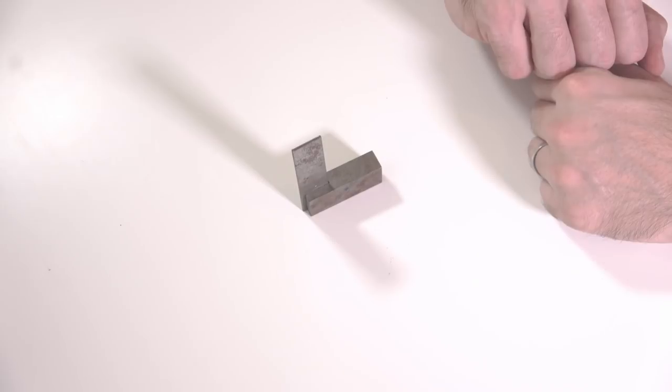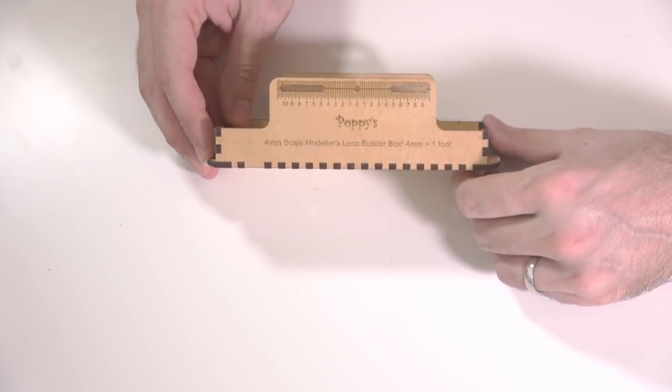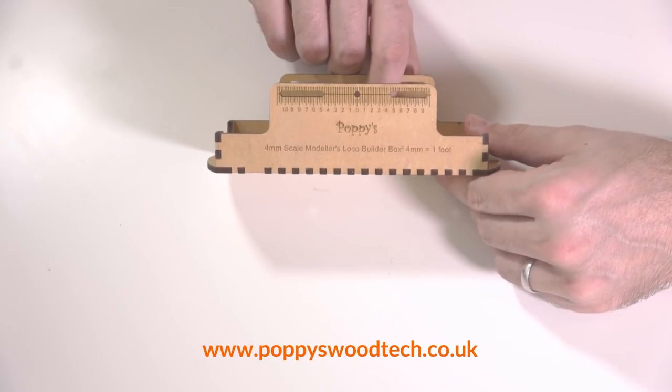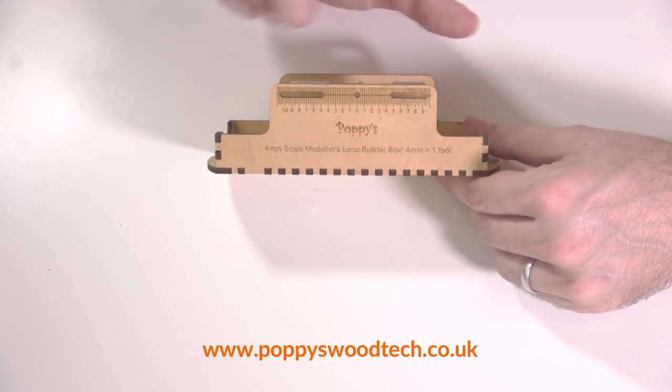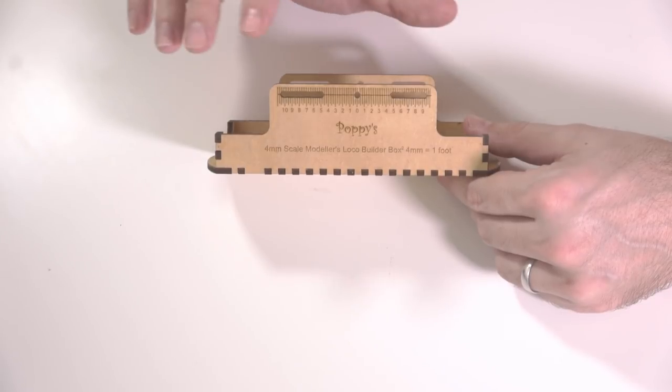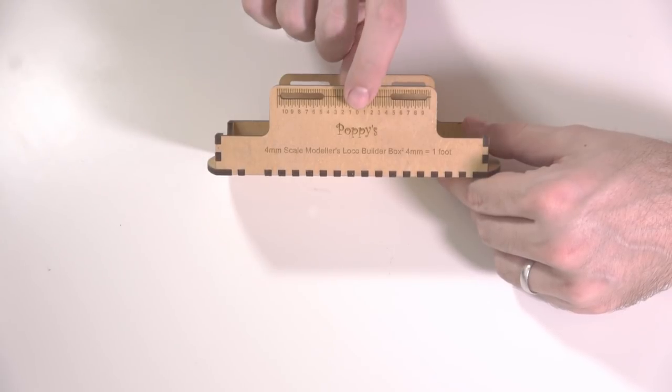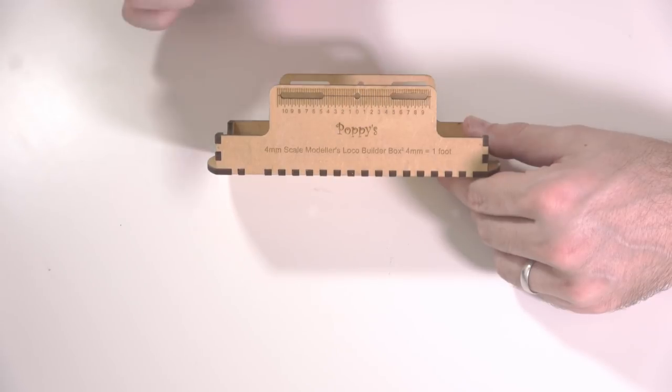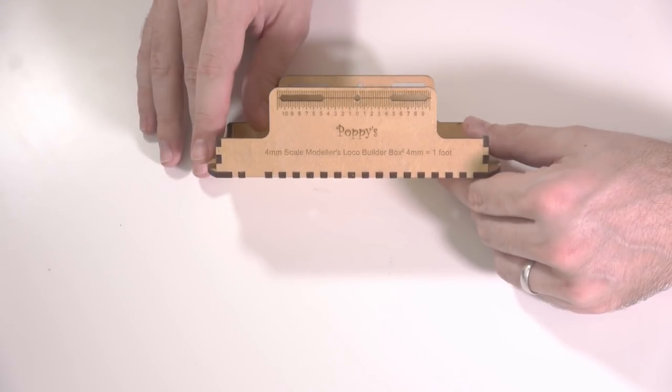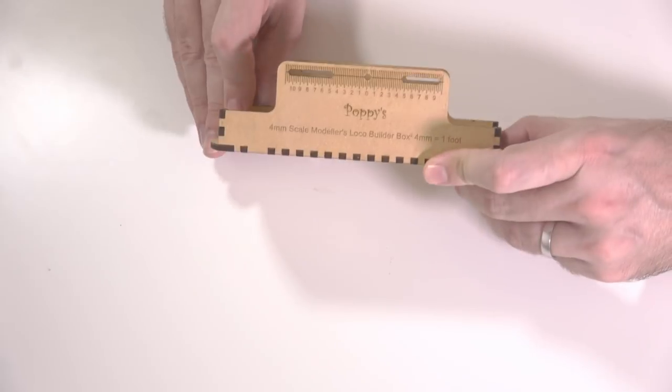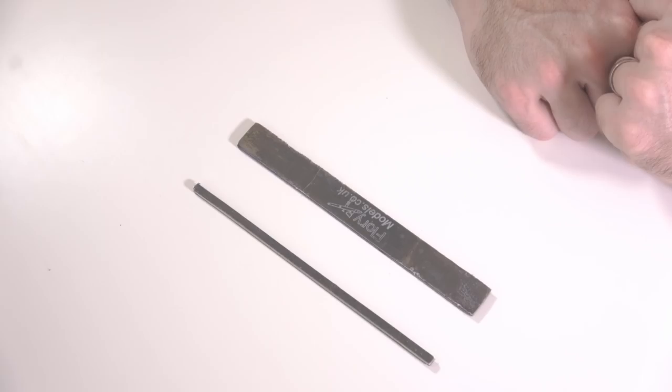This is a fantastic piece of kit, this is probably one of the most important things for any beginner or experienced modeler. It's a jig, and this is to help you set up the chassis in a parallel manner, make sure it's all square and true. This is a Poppyswoodtech Loco Builder Box, and I will put the link to their company in the description below. These are absolutely superb for helping you build model railway locomotives.